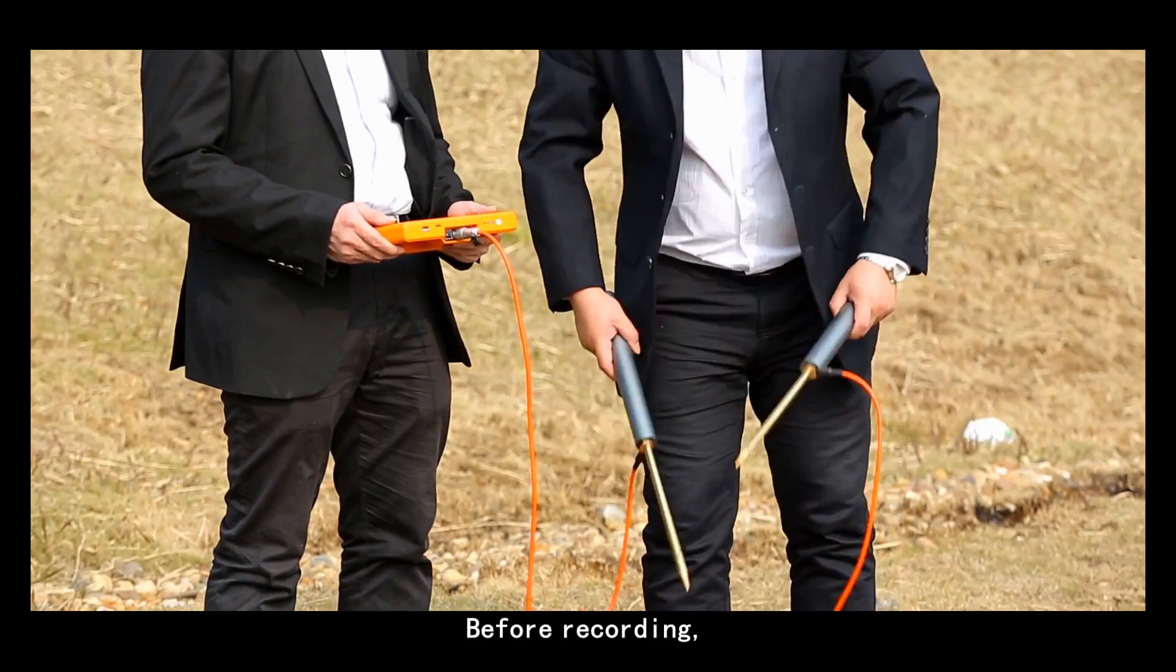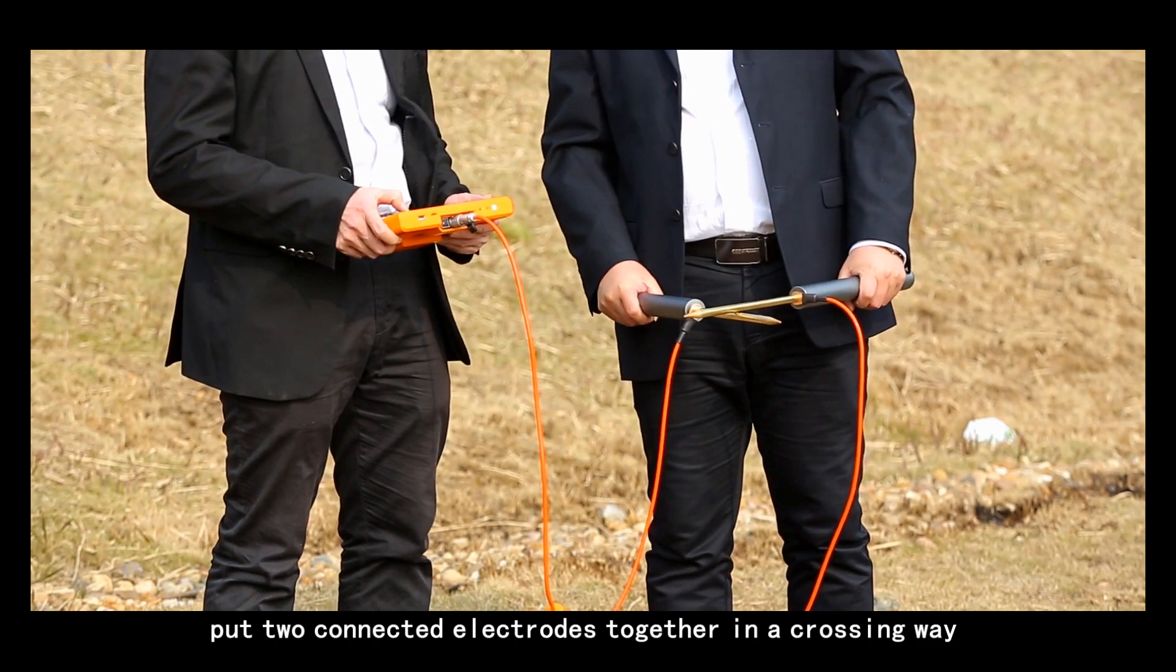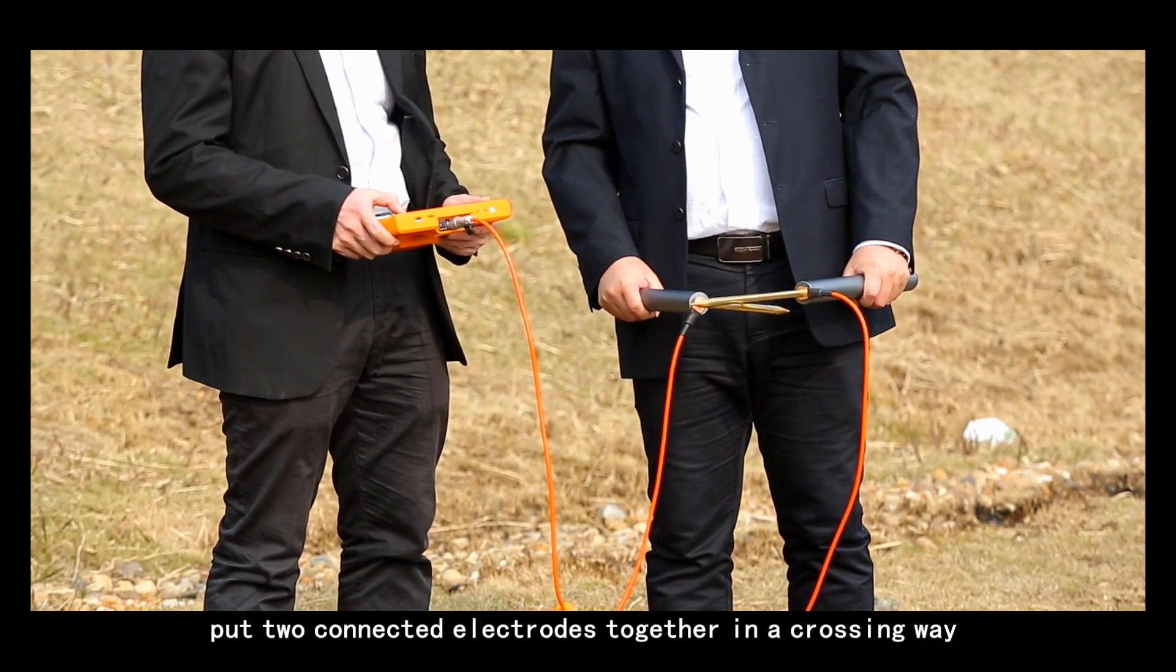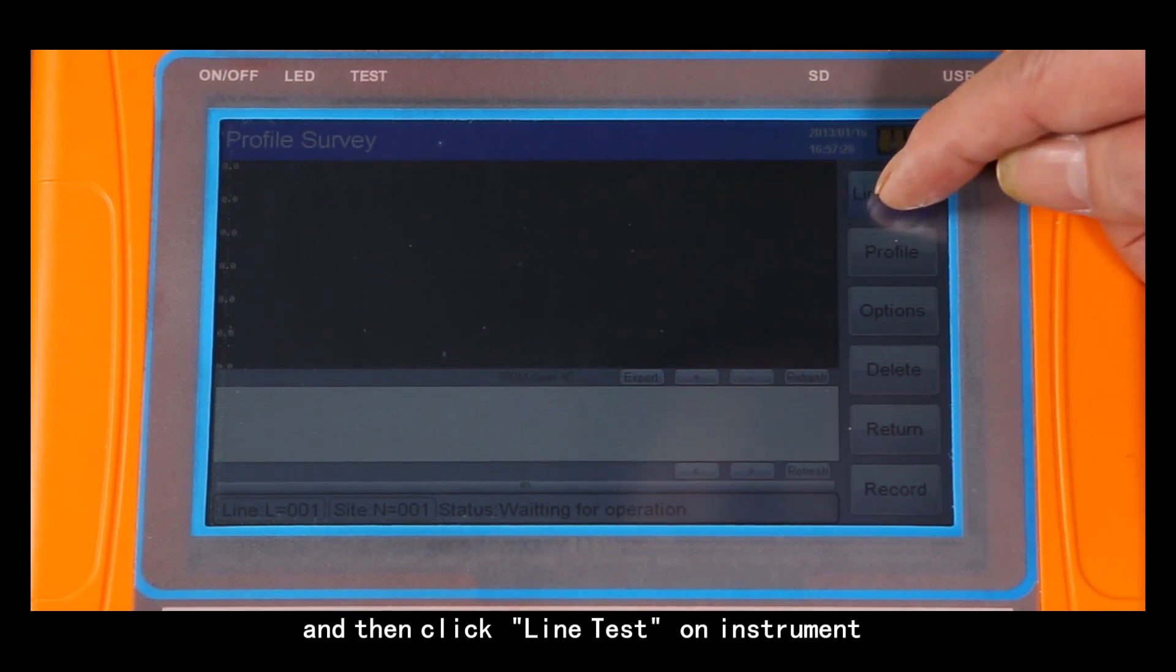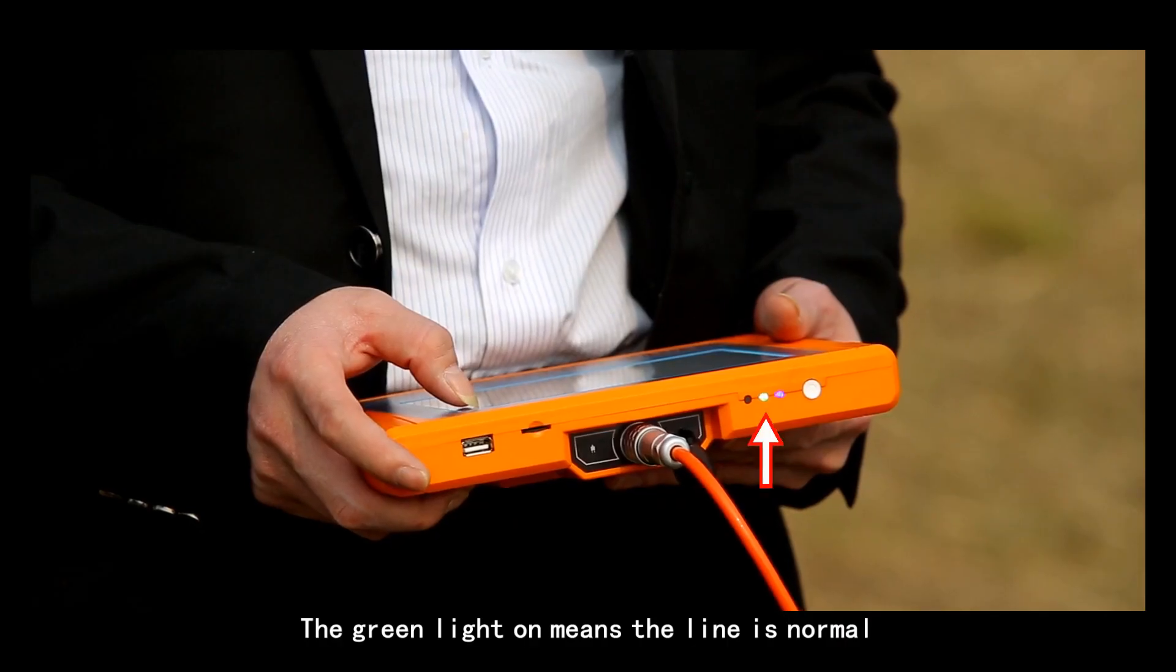Before recording, put two connected electrodes together in a crossing way and then click line test on instrument. The green line on means the line is normal.